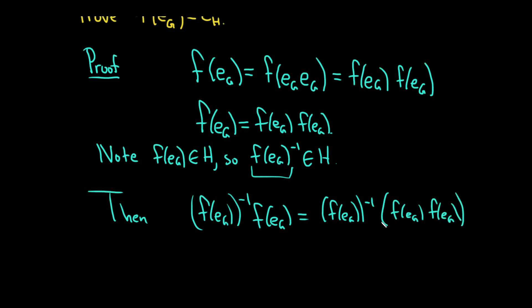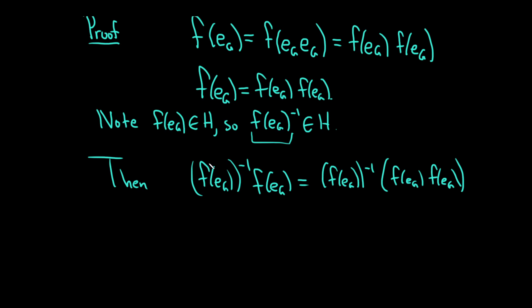You can use associativity here on the right-hand side, and these will cancel because it's an inverse times the element that it's an inverse of. So this is the identity element in H. On the left, these will go away and you'll get the identity element in H times f of e sub G. Because this is the identity element, you'll just get f of e sub G.